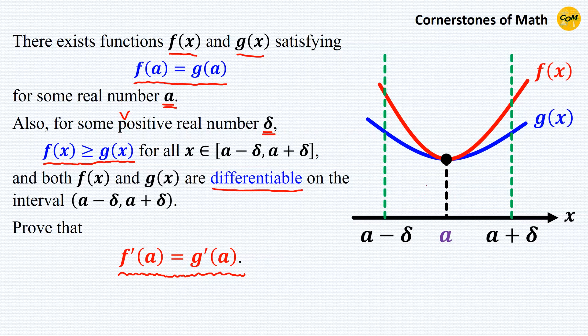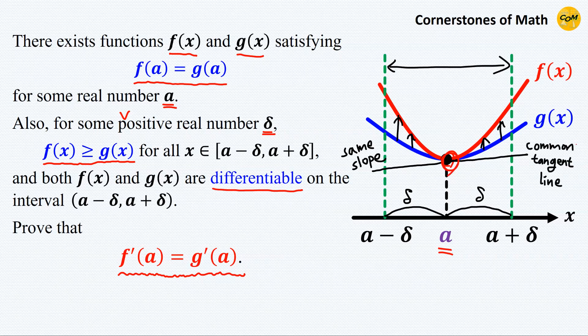So in less formal language, the graphs of two functions meet at x equals a, and in the vicinity of a, which is denoted using the positive real number delta, one graph is always on or above the other, and both functions are differentiable in that vicinity. Then we must prove that the two graphs have the same slope at x equals a, or should I say they have the common tangent line at x equals a.